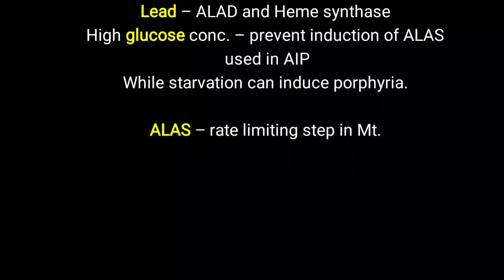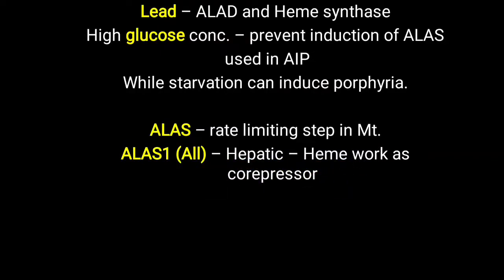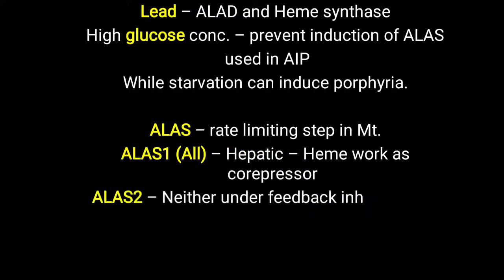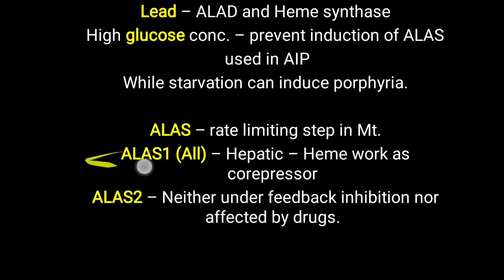ALA synthase is the rate-limiting enzyme in heme synthesis and exists in two types. ALA synthase 1 is present in most tissues, predominantly in the hepatic site. When sufficient heme is present, it acts as a co-repressor and suppresses hepatic ALA synthase, preventing further heme formation. ALA synthase 2 is the erythroid type, found in fetal liver and adult bone marrow, and is neither under feedback control nor under the control of drugs.